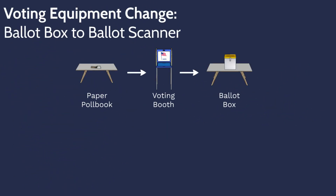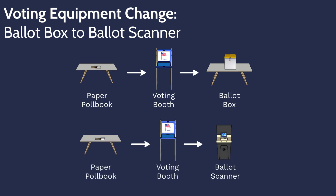In this video we investigate the effect of implementing a ballot scanner into a paper-based voting process. The considered voting process traditionally uses paper poll books, hand-marked paper ballots, and central count ballot scanners with precinct ballot submission to a ballot box.